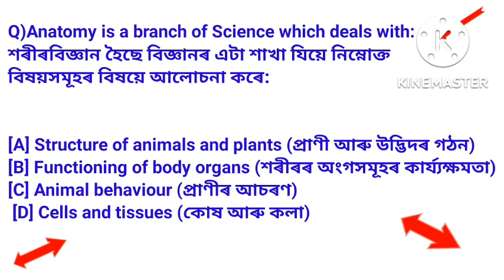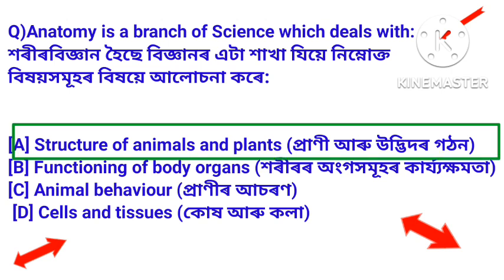Anatomy is a branch of science which deals with — khorir vigyan hoise vigyanar eta hakha. The answer is structure of animals and plants. Vigyanar eta hakha ziye niki prani aru udbidhar gothanar bhihoi homo hor humpor ke adhoyan tathha alusona kore.